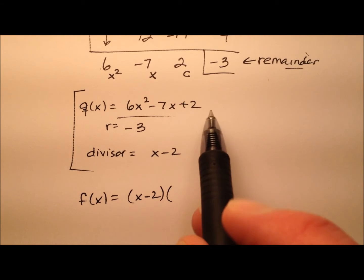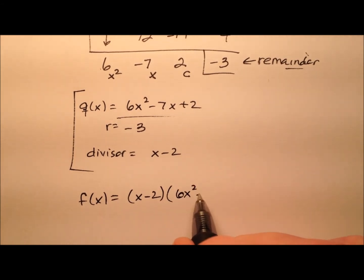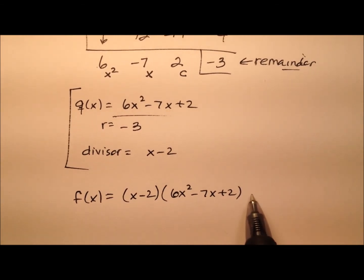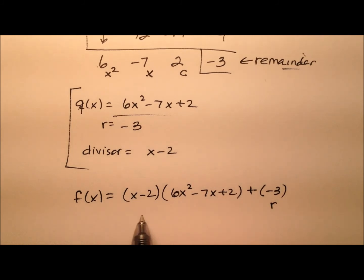Times my q(x), which is this quotient polynomial here, this function. And then plus, and it's a negative right here, so sometimes I've seen a plus a negative 3 in parentheses or just a minus 3. I think for now, let's go ahead and put plus a negative 3 and have the understanding that's my r value. And you can just as easily just say minus 3 and that's okay too.